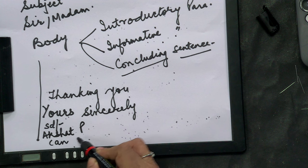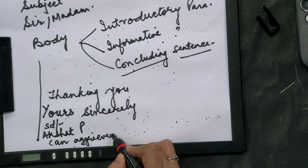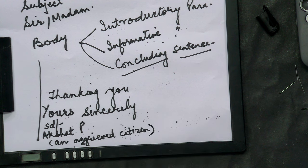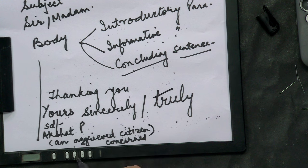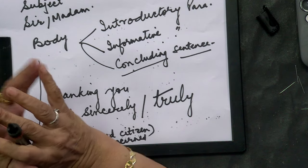Whatever name is given in the question paper, write that name — for example, 'Akshat.' You are addressing some problem, so you are an aggrieved citizen. If you find the spelling of 'aggrieved' difficult, you may write 'a concerned citizen' or 'an aware citizen.' You can also write 'Yours truly' — T-R-U-L-Y, only five letters, not 'truely.' After putting your signature, write your name and designation — in what capacity you are writing the letter. The sender's name along with designation may or may not be added.